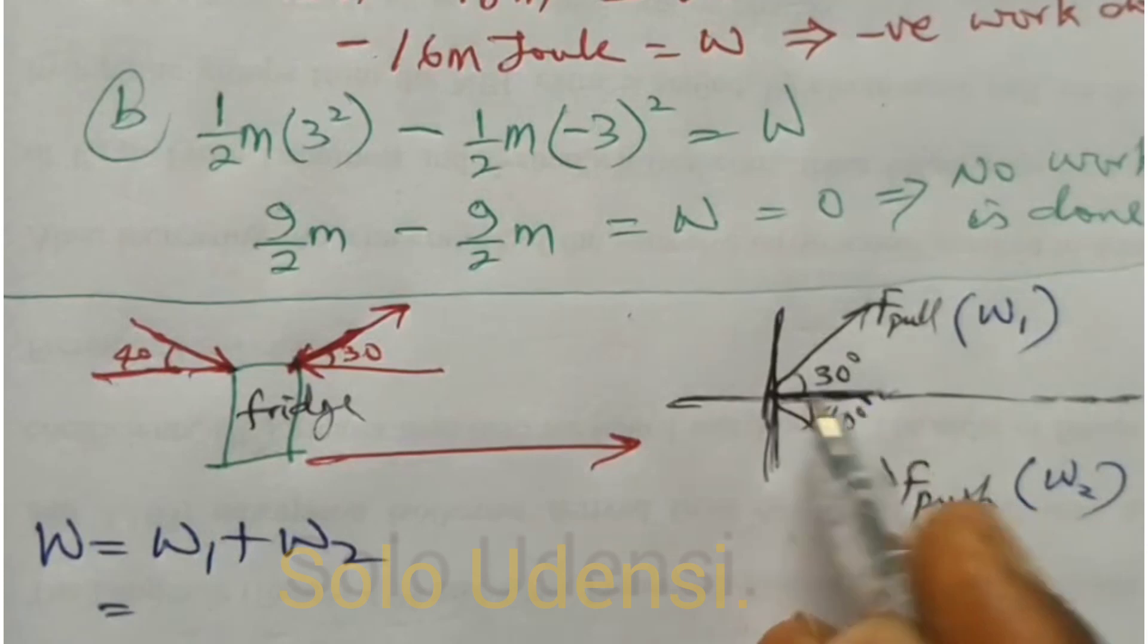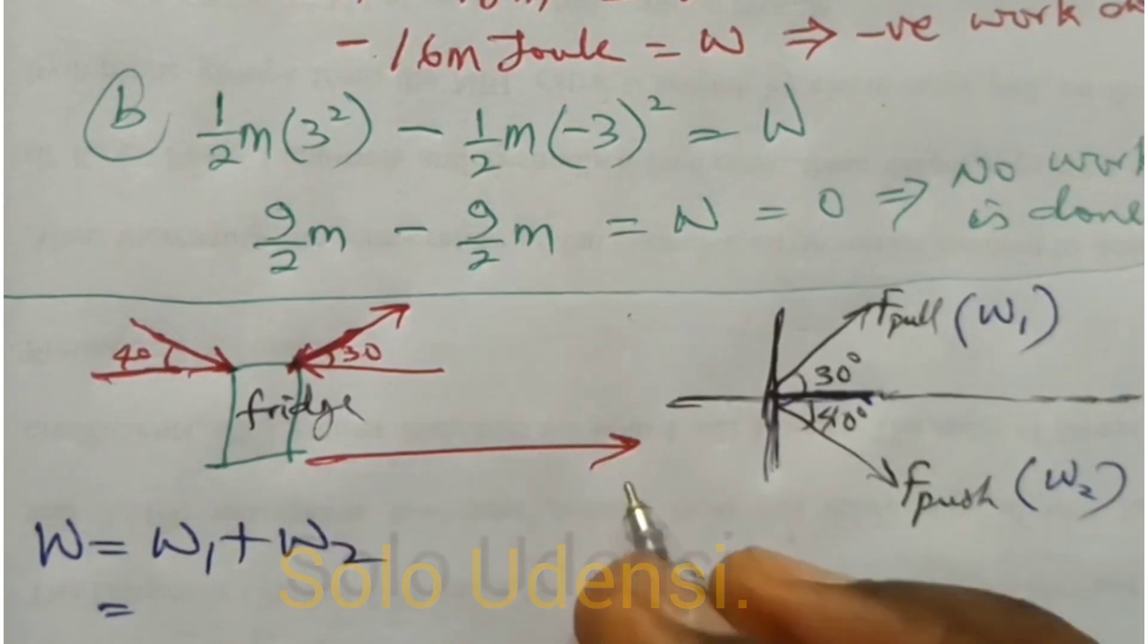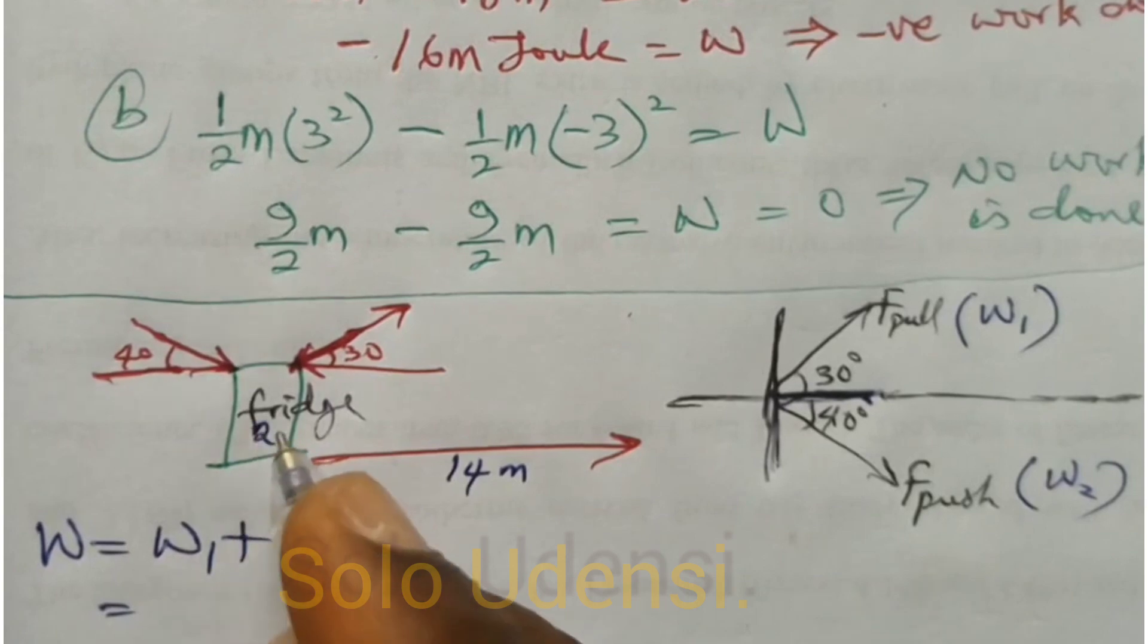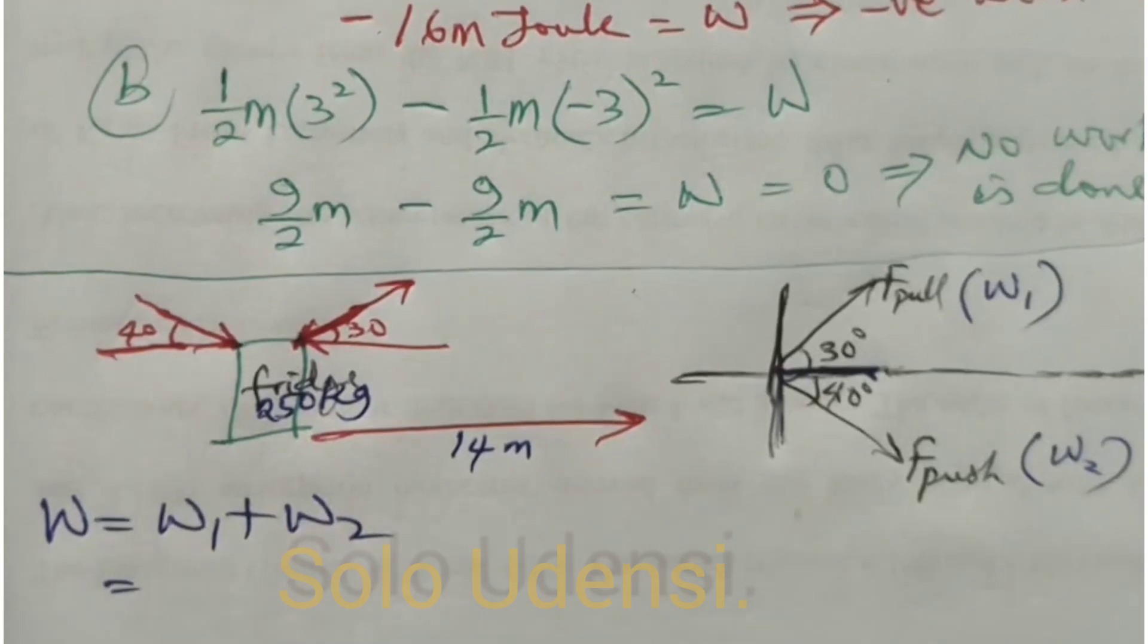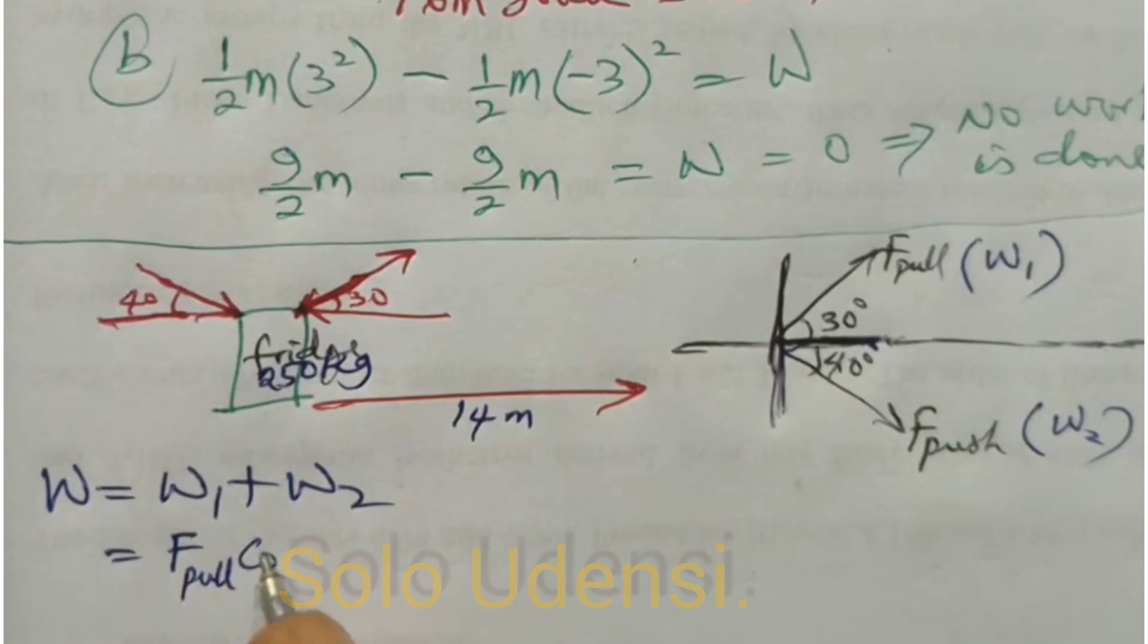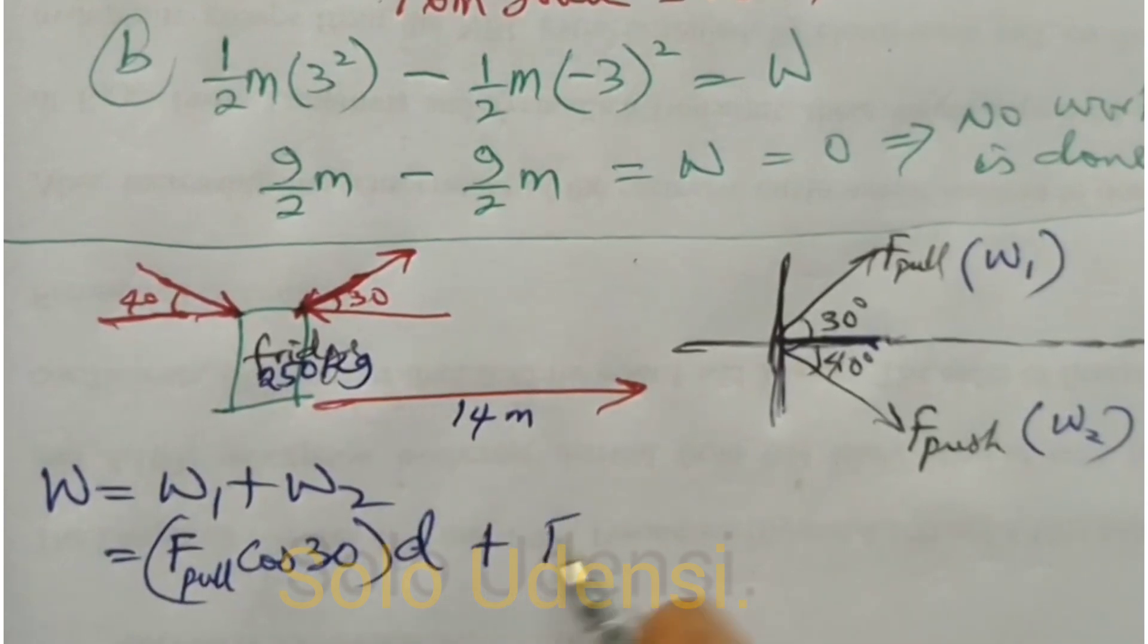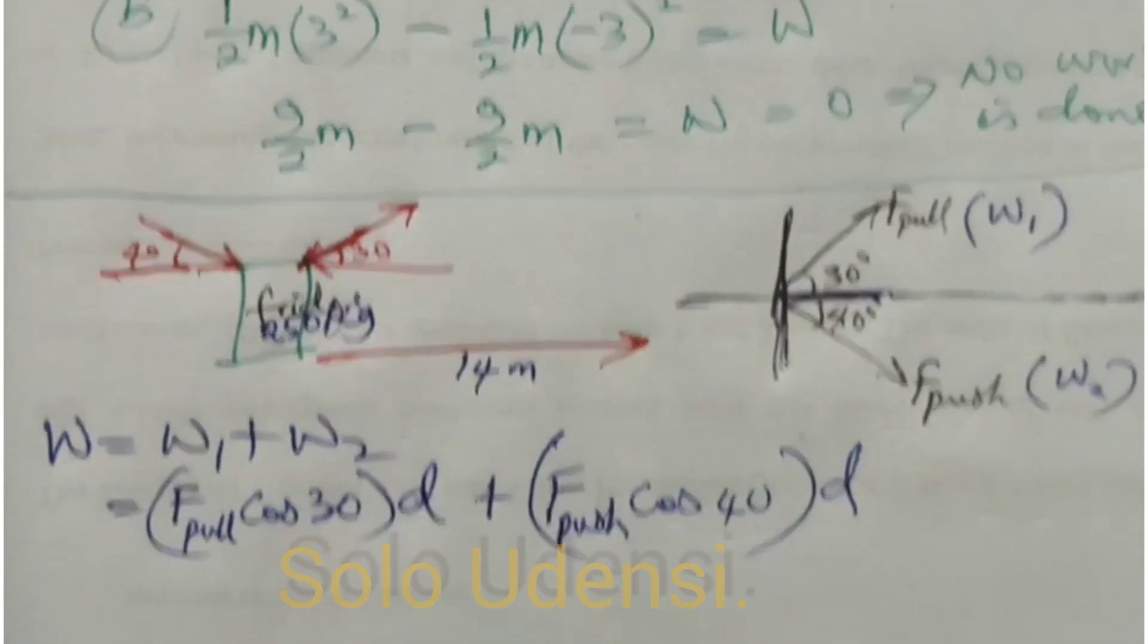The force that will push has this component, this component. This will be Fpull cos θ while this will be Fpush cos θ. So the distance, let's say the distance that this thing is moving is around 14 meters, and the mass of this fridge is 250 kg. So what we are going to do now is to say for this first one, we have Fpull cos θ times the distance moved, plus for the W₂ have Fpush cos 40 times the horizontal distance moved.